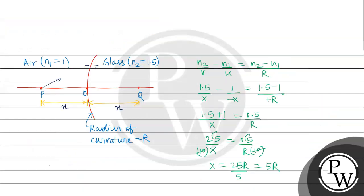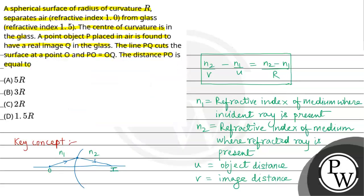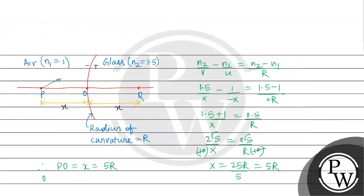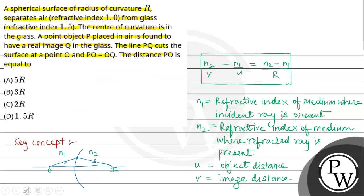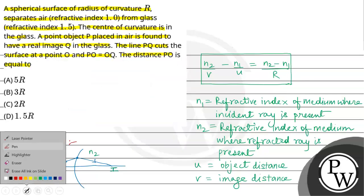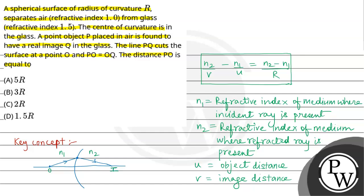So, distance PO is nothing but x, that is 5R. Therefore, Option A is correct. The final answer for the given question is Option A: 5R. Hope you understand it well. All the best.